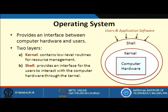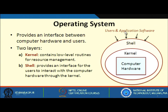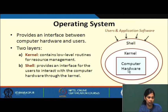There are two layers in an operating system. The kernel layer contains low-level routines for resource management, and sits at the bottom close to the hardware. Users and application software cannot access computer hardware directly. Through the shell, an interface is provided for the user to interact with the computer hardware via the kernel. So the shell is an interface for the user or application software to interact with hardware through the kernel.